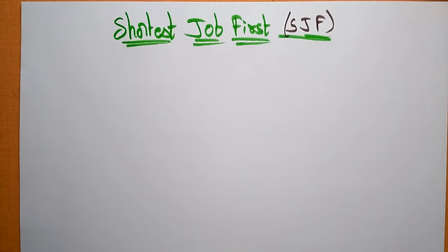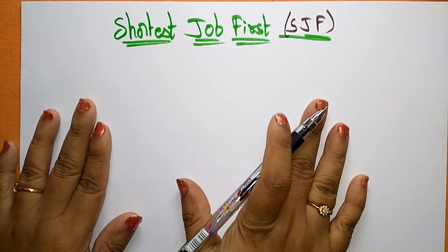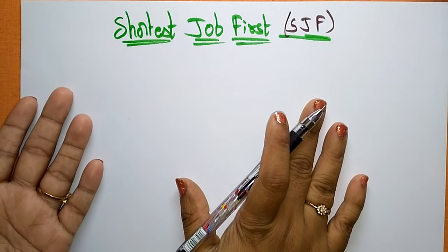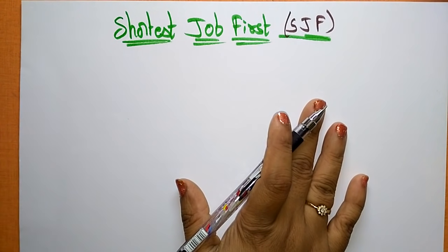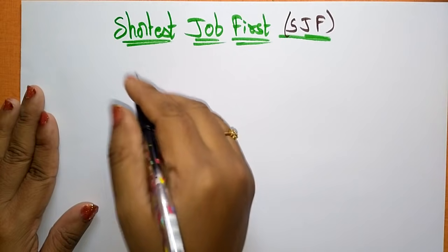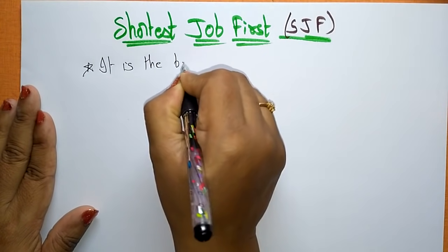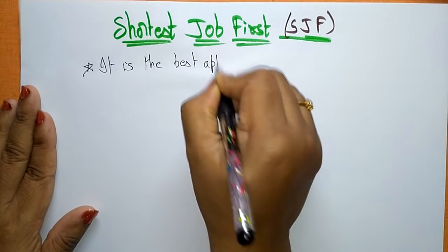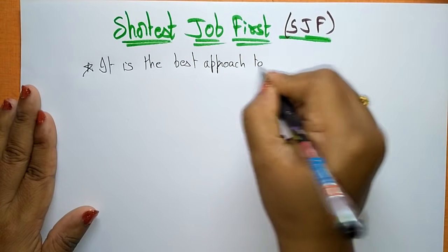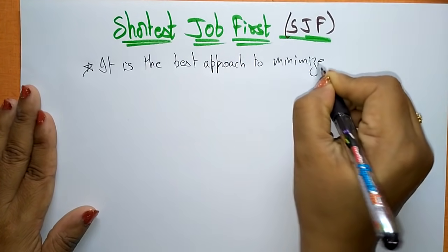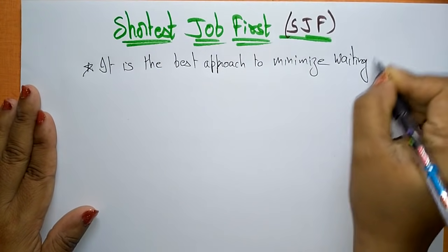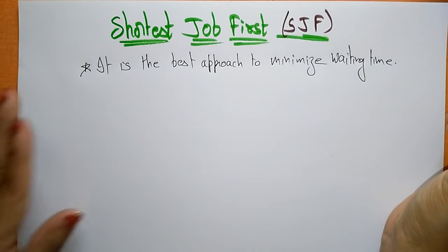Coming to the next scheduling algorithm, that is the Shortest Job First (SJF) algorithm. So what is the Shortest Job First algorithm? It is the best approach to minimize the waiting time. If you observe First Come First Serve, the waiting time is getting more when you take different patterns of processes. So here, Shortest Job First is the best approach to minimize waiting time.